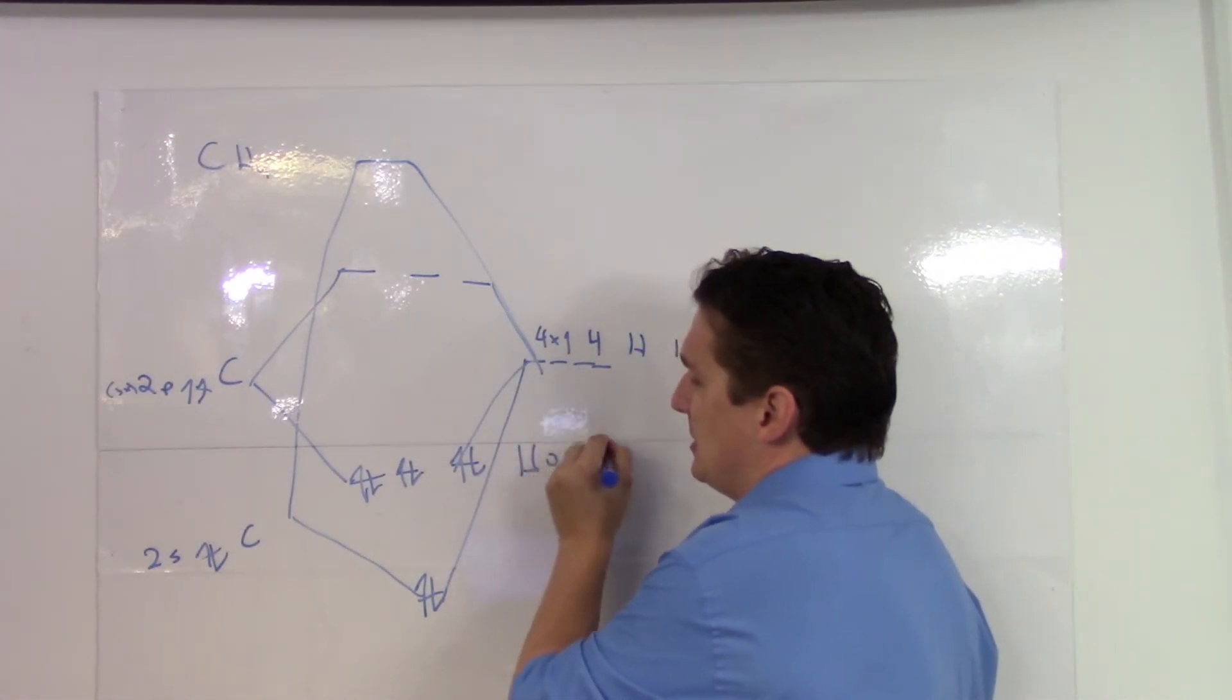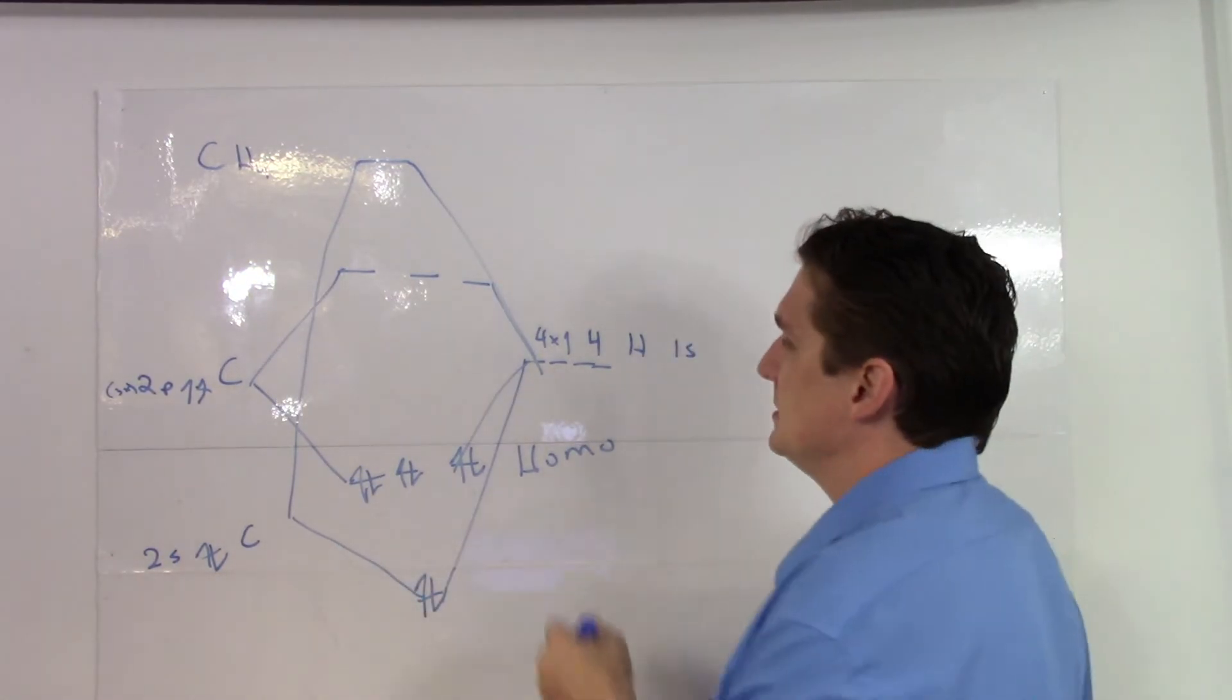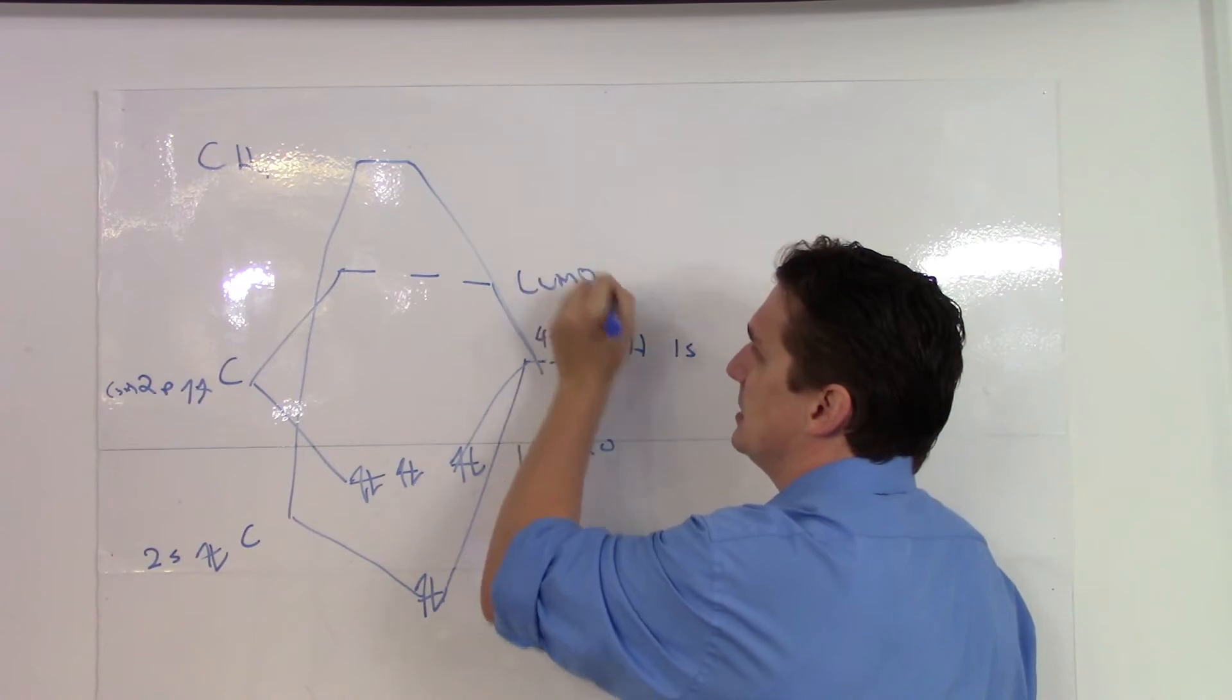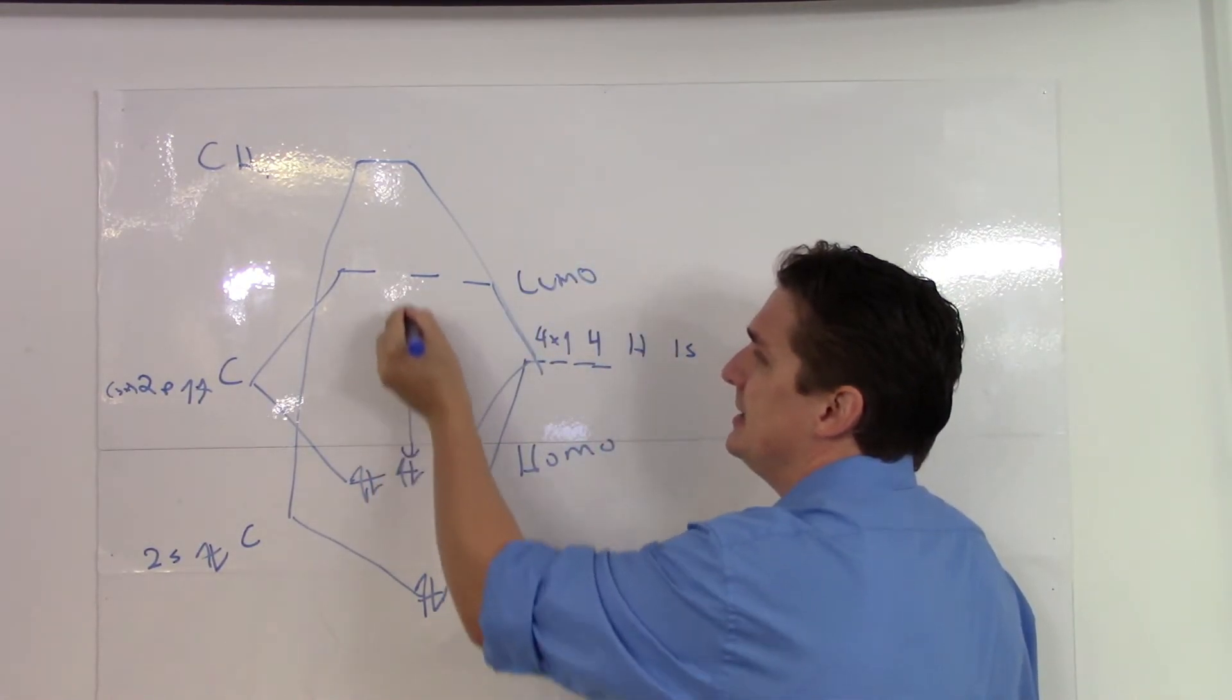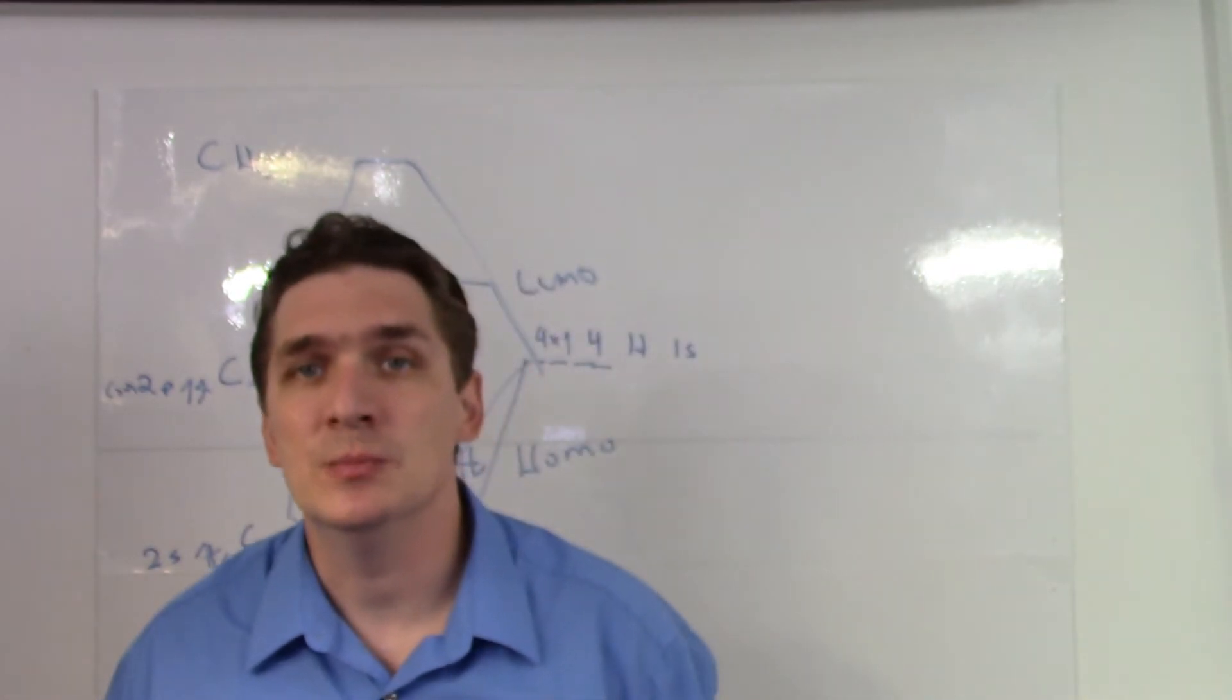Your highest occupied molecular orbitals are these, and this is what's called a T3G set. And these are your lowest unoccupied molecular orbitals. Again, the energy of light absorbed is going to correspond to the difference between the HOMO and LUMO energies.